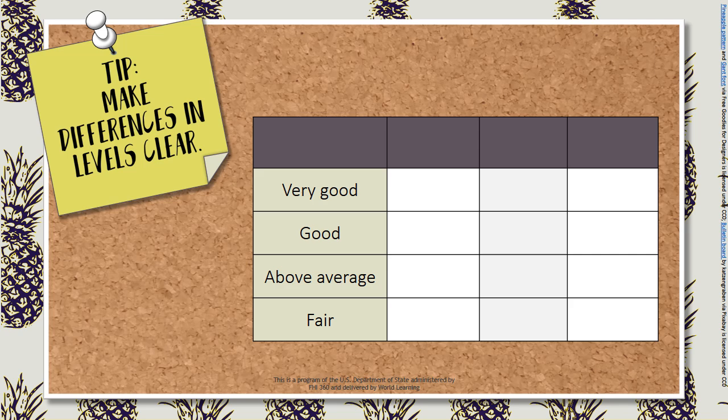When choosing levels of mastery and writing quality definitions, make sure that the levels are distinguishable from one another. Sometimes words like few and some may be hard to distinguish. You may need to add more information to make the difference clear.